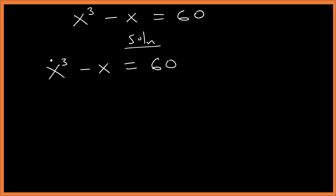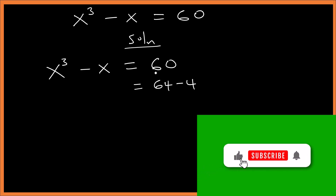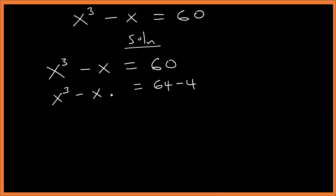Because of the x cubed term, we want to use the sum of cubes and difference of cubes. Because of the 60, we are going to rewrite it as 64 minus 4. So 60 becomes 64 minus 4 — we have done nothing to the value.